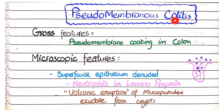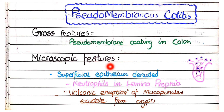In pseudomembranous colitis, on gross specimen you see pseudomembranes coating the colon. These pseudomembranes are yellowish or grayish exudates that line the inside of the colon. On microscopic picture, the superficial epithelium is denuded, neutrophils are present in the lamina propria, and there is volcanic eruption of mucopurulent exudate from the crypts.